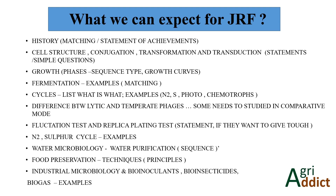Now here is an overview of the most important topics for JRF from microbiology. Around 60 to 70 percent of questions come from these topics. It starts with history, where you will get questions in matching or statement-wise format about scientists' achievements and their contributions. Secondly, cell structure and modes of reproduction in bacteria — conjugation, transformation, and transduction — are very important topics requiring clear understanding. You can also refer to the BD Singh book for the modes of reproduction.